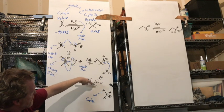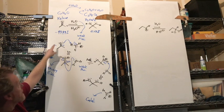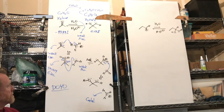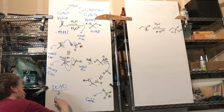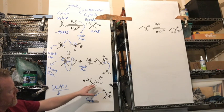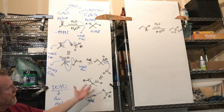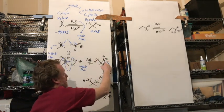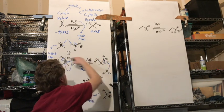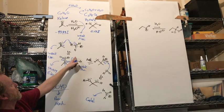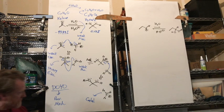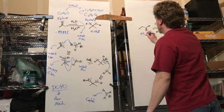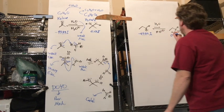Even though we show equilibrium arrows, the hydrate is only a tiny fraction — the equilibrium lies heavily on the ketone side. A good exercise is the reverse mechanism: under acidic conditions, protonate one of the alcohols to make a good leaving group, then use a lone pair push-pull to eliminate it and reform the carbonyl.